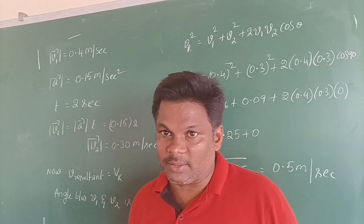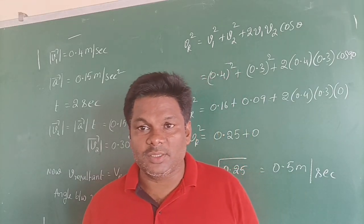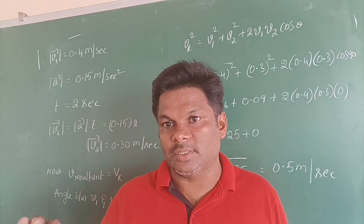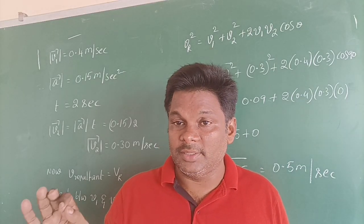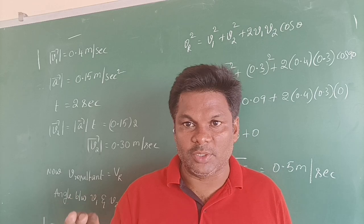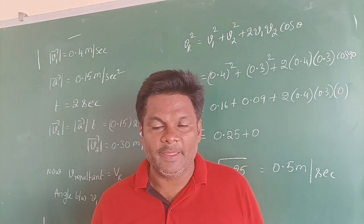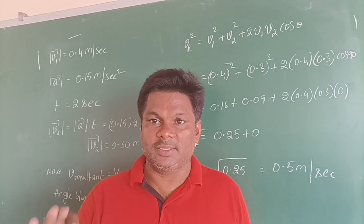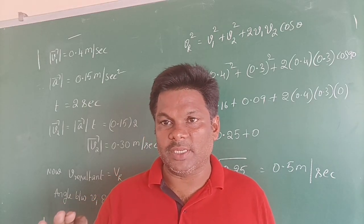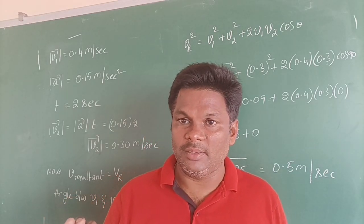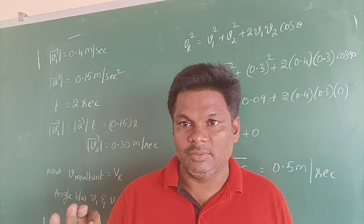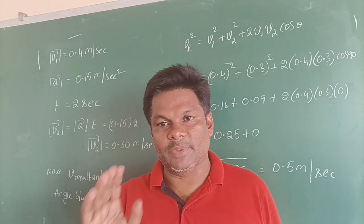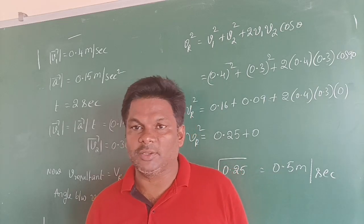Now what is he asking to calculate? He is asking to find the resultant velocity when these two velocities are perpendicular to each other. That means the angle between these two is equal to 90 degrees. The first vector is V1, second vector is V2, and we need to calculate resultant of these two when they are perpendicular to each other.